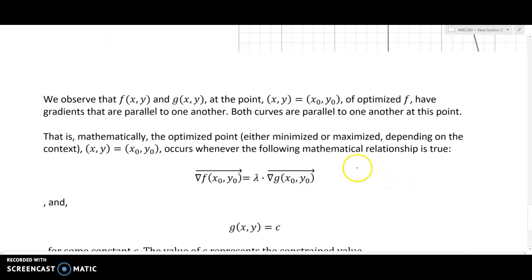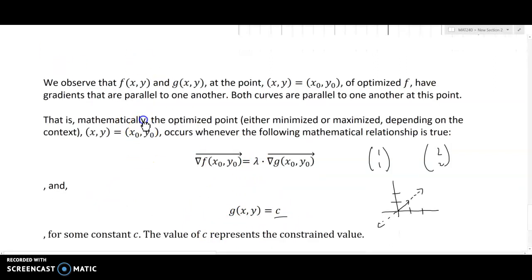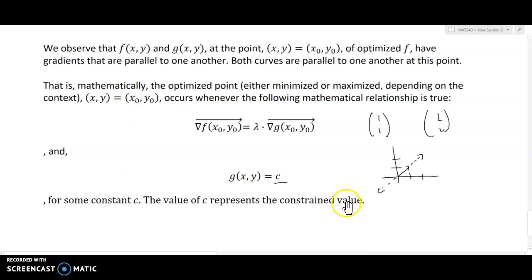So if this is going to be generally true of any objective function and the corresponding constraint function, then what I should be able to say is there's a mathematical statement that describes this. That is, mathematically, the optimized point - either minimize or maximize depending on the context - (x,y) = (x₀, y₀) occurs whenever the following mathematical relationship is true: the gradient of f is equal to some multiple of g. So remember that vectors that are parallel are multiples of one another. For instance, the vector (1,1) and the vector (2,2) point in exactly the same direction.